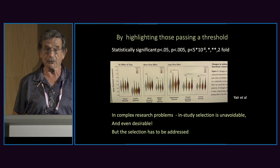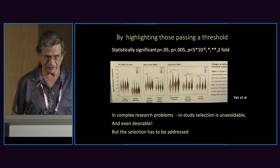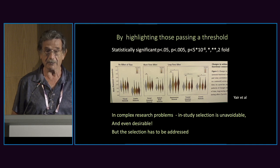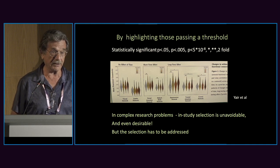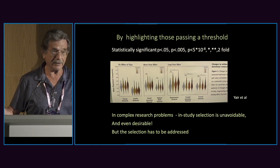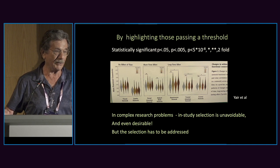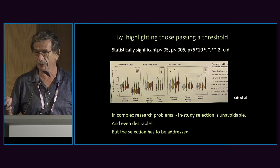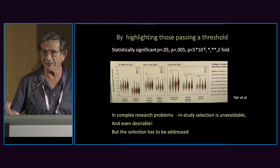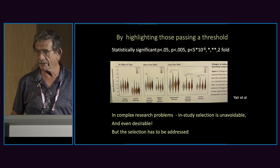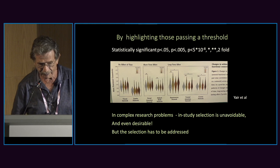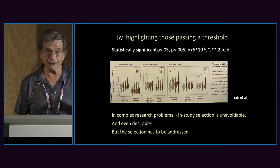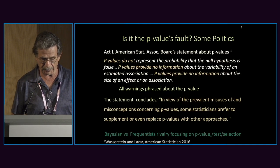The point is I'm not criticizing it. In complex research problems, in-study selection is unavoidable — not only that, it's desirable, because who can take the entire set of results in a paper and make sense of it? Nobody will. Most people read the title and then, if it's interesting enough, the abstract. But the point is that after you do the selection, it has to be addressed.